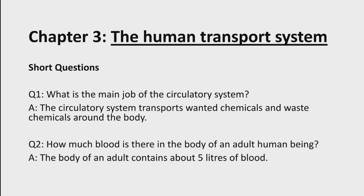Question No. 2: How much blood is there in the body of an adult human being? Answer: The body of an adult contains about 5 liters of blood.